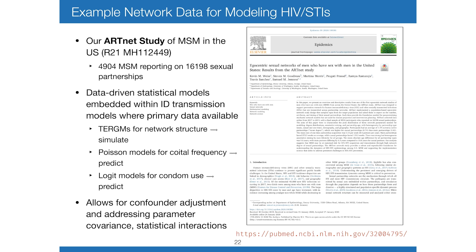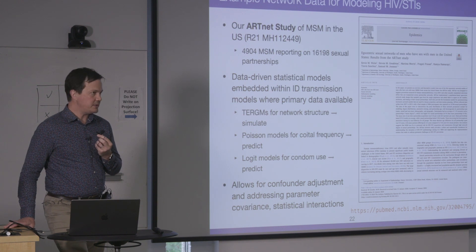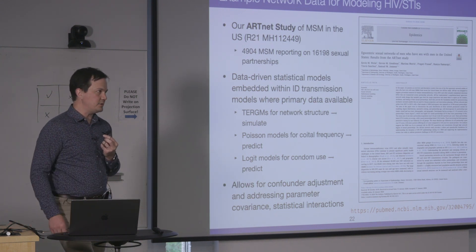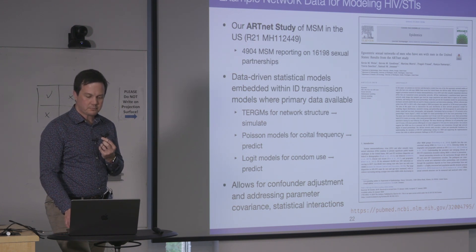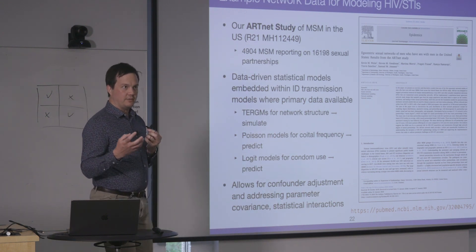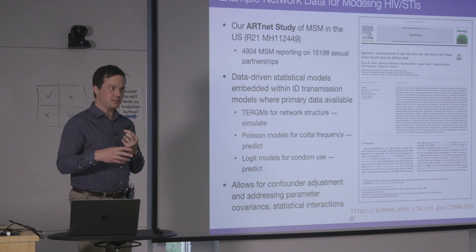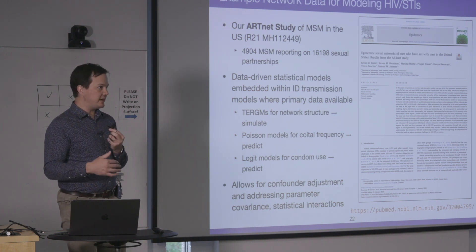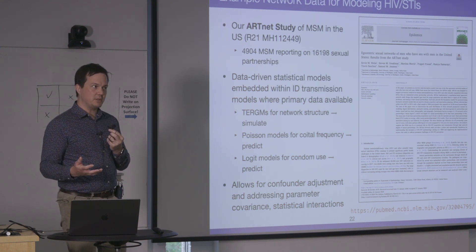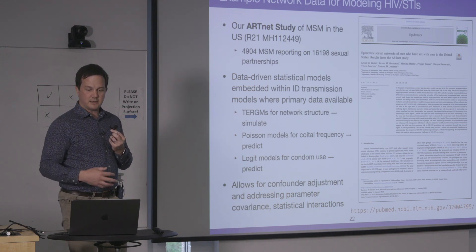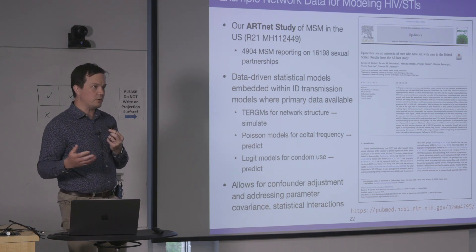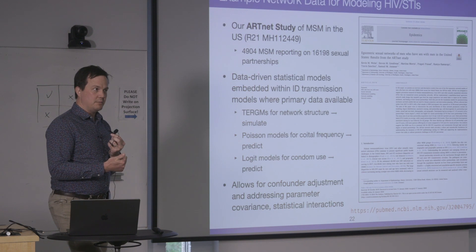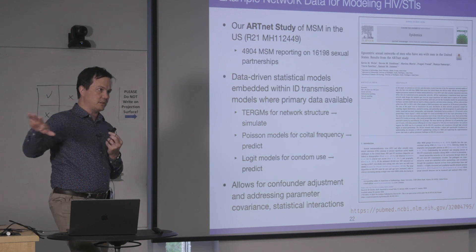One example in the HIV context is my ArtNet study — a web-based study collecting data on about 5,000 men and 16,000 of their partnerships, with everything needed for HIV and STI modeling. What we're building into these agent-based models with the integration of this data and TERGMs is also other GLMs — generalized linear models — to do regression analysis and prediction from primary line-level data, taking into account confounding, stratifications, and interactions that are often a challenge for agent-based models that only take marginal distributions.